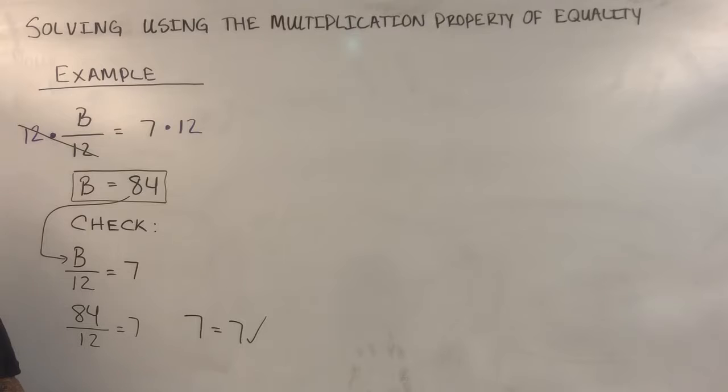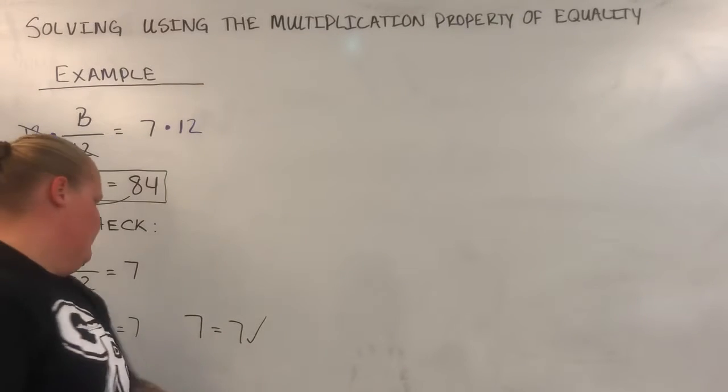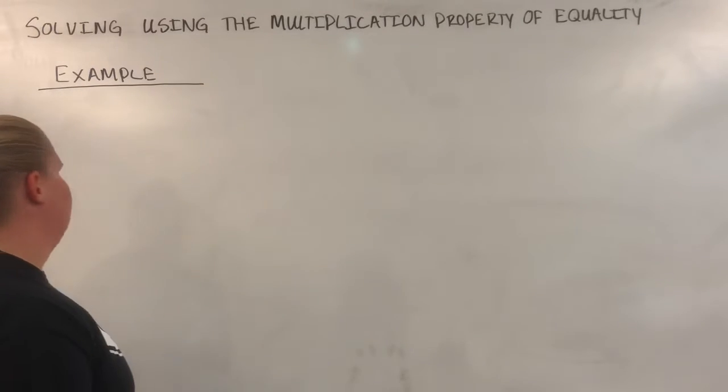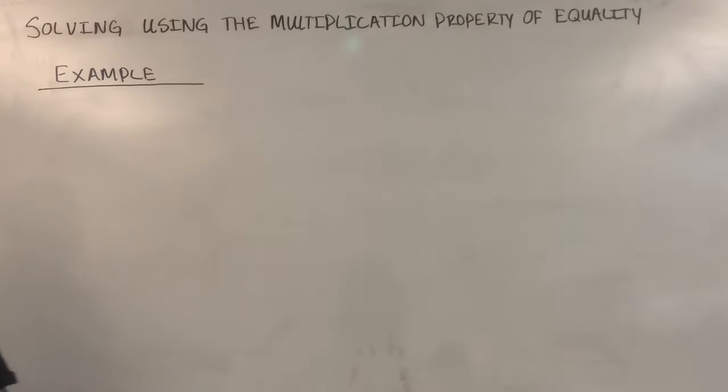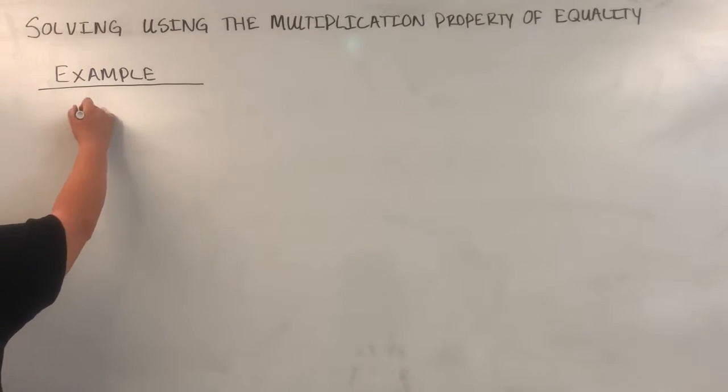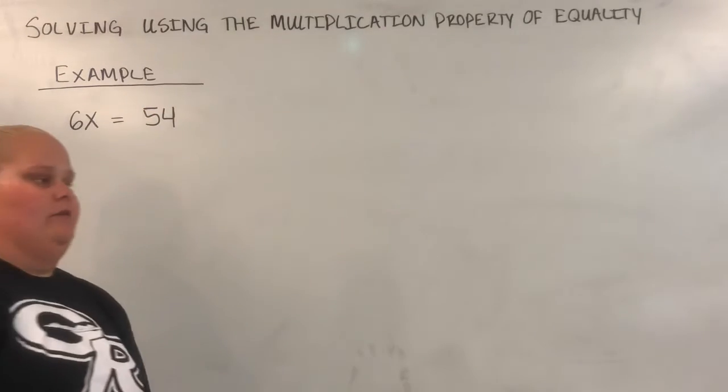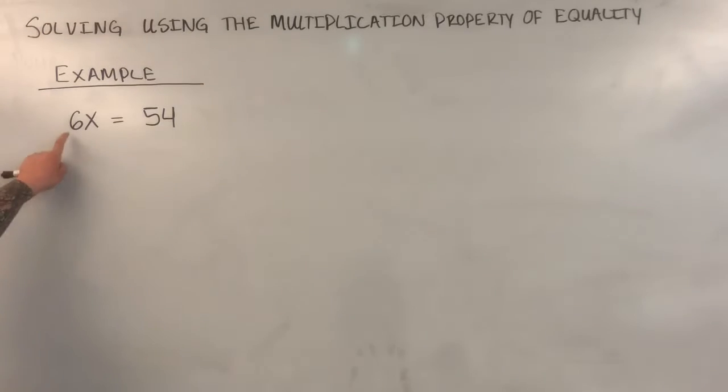We're going to take a look at one other example here. Our second example that we're taking a look at is going to be 6x equals 54. Now we're trying to get x by itself. To do that, I need to get rid of this 6. There's no sign between 6 and x, but when they're right next to each other, it's implied that multiplication is occurring. This reads 6 times x. Times means multiply.